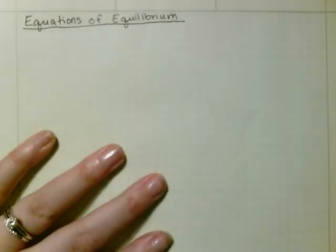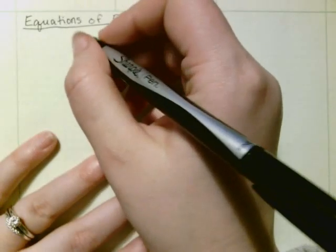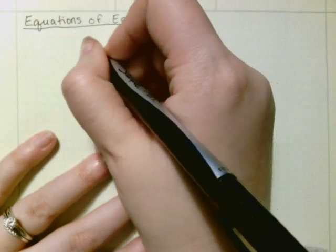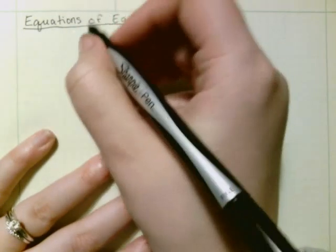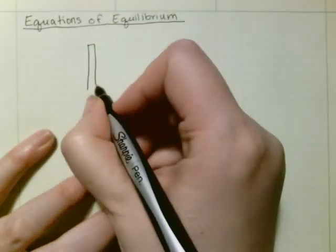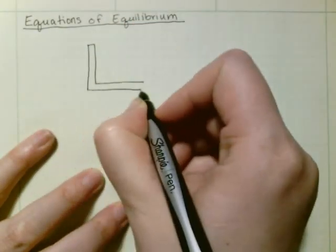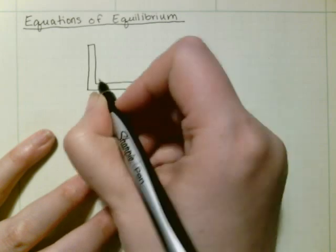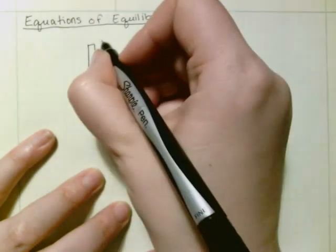Alright, this is equations of equilibrium. So let's say we had that problem from 5.4. This is point A, this is point B, and this is point C.